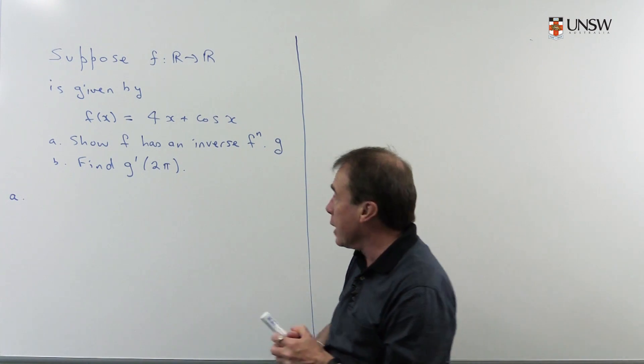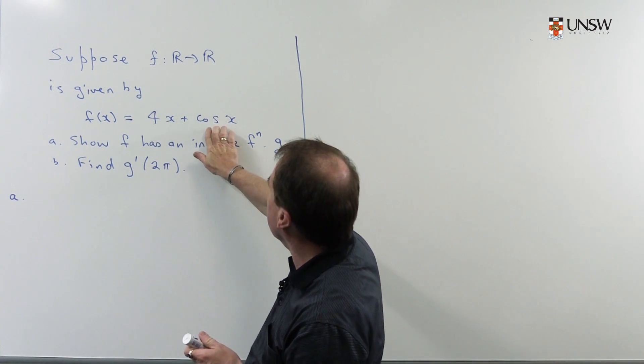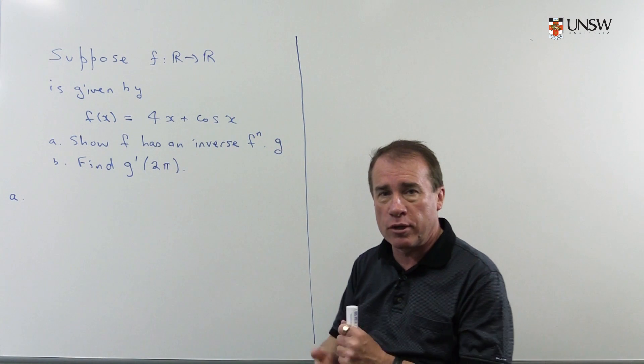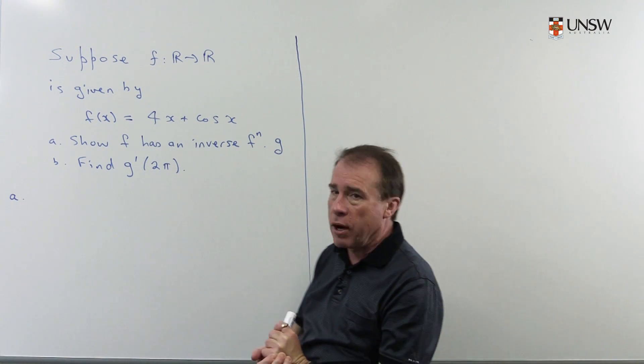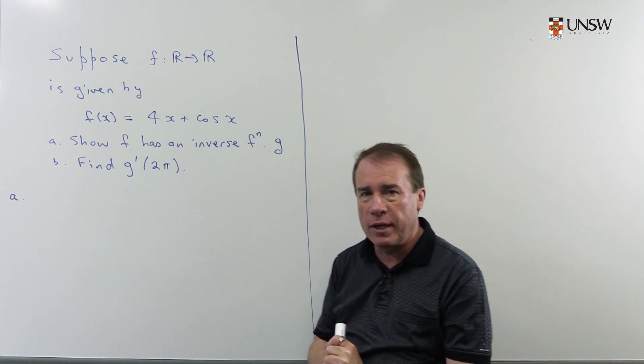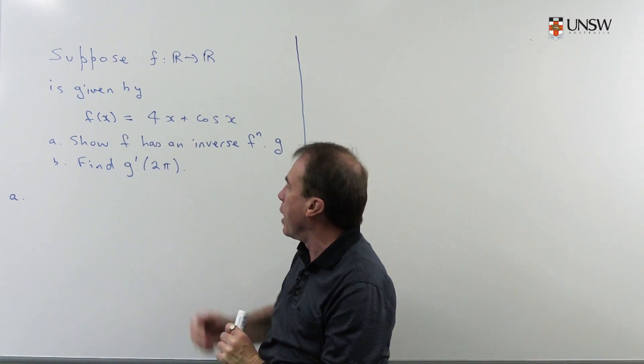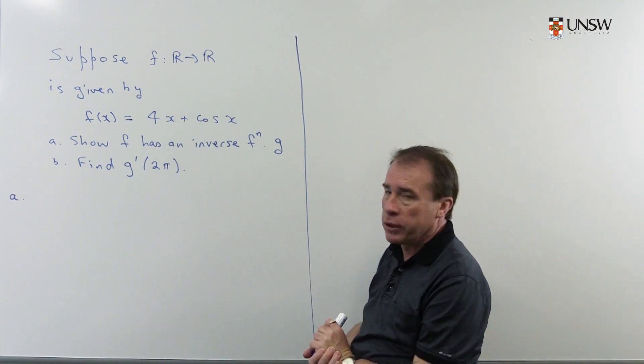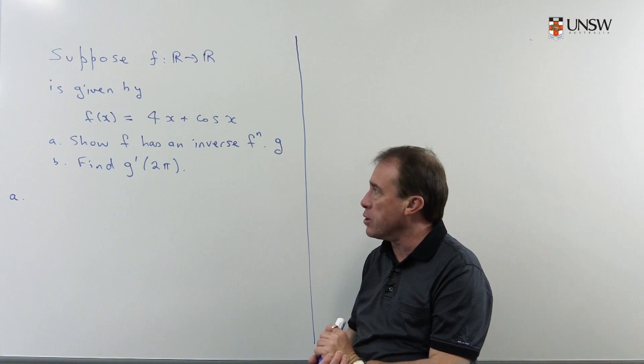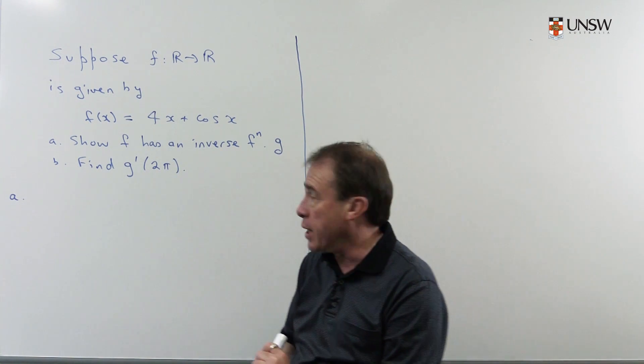By the way, at first glance, it looks as though this curve is going to wobble because of the cosine term, and so it's slightly surprising that this function does in fact have an inverse. But the 4x term at the beginning, if you plot this on Maple, you'll see that the function is in fact one-to-one and does have an inverse.